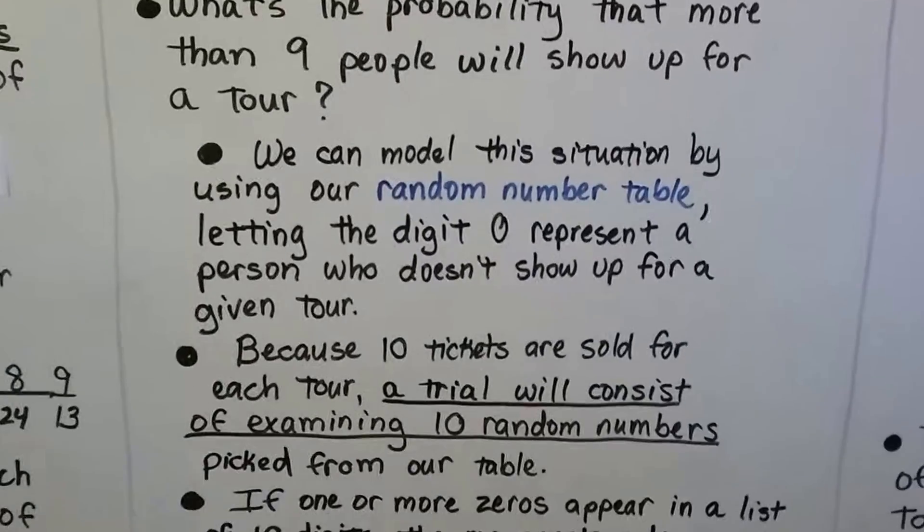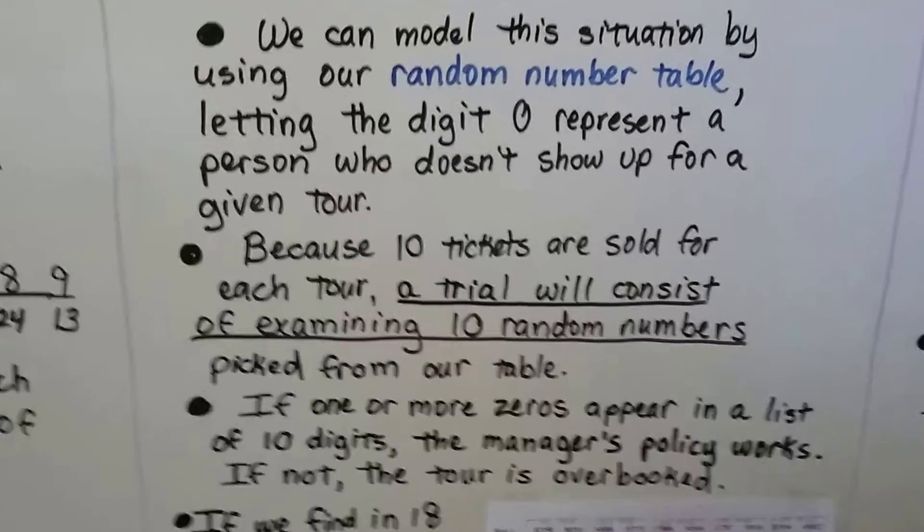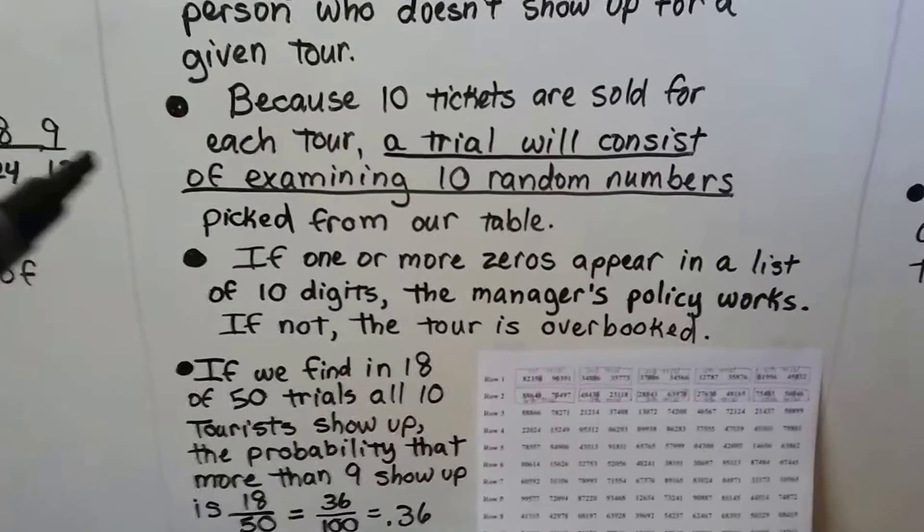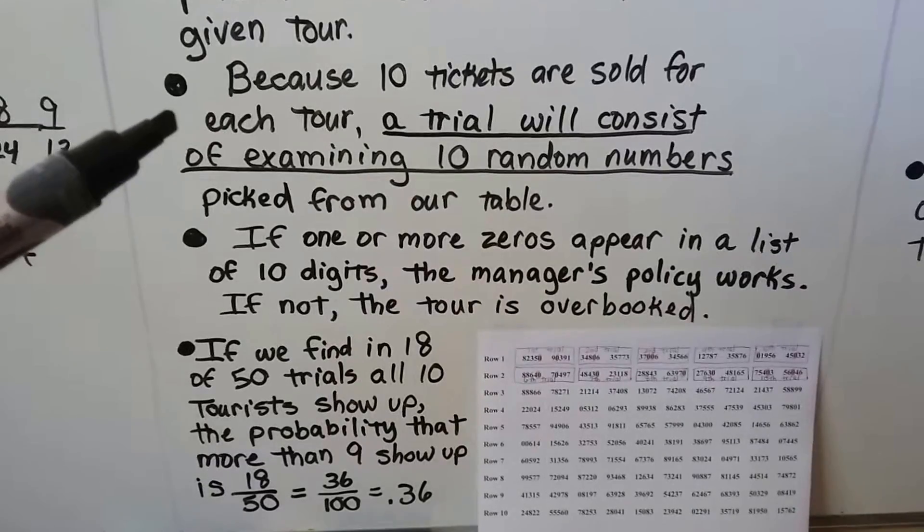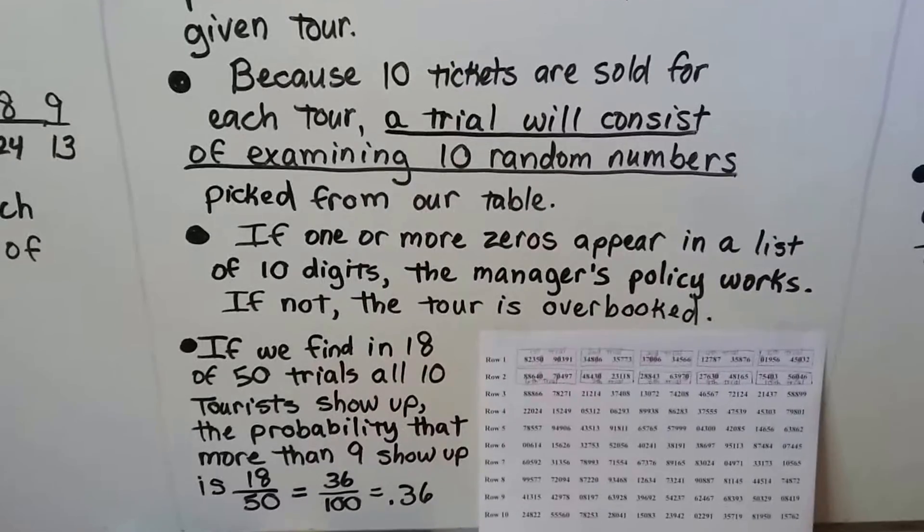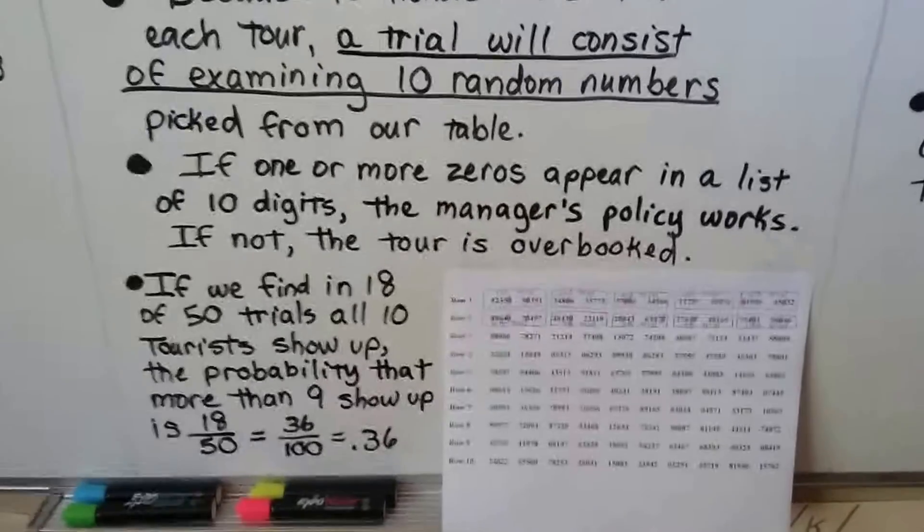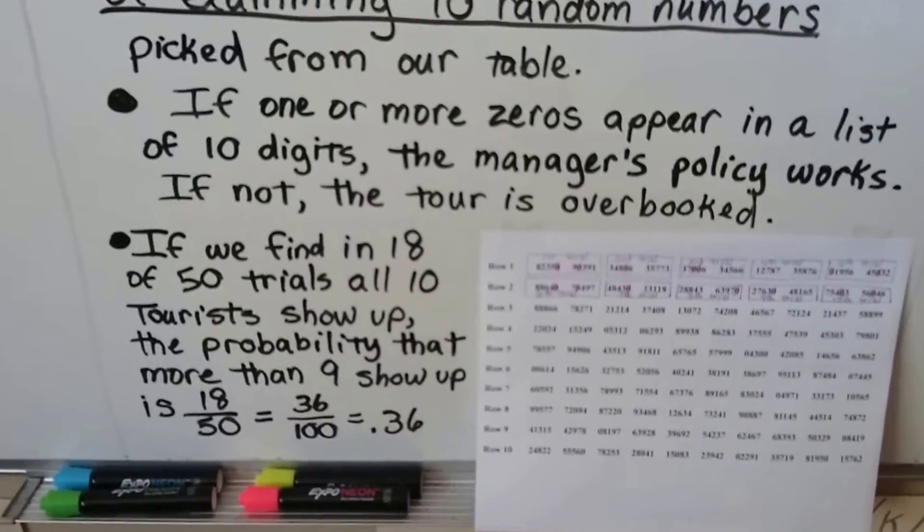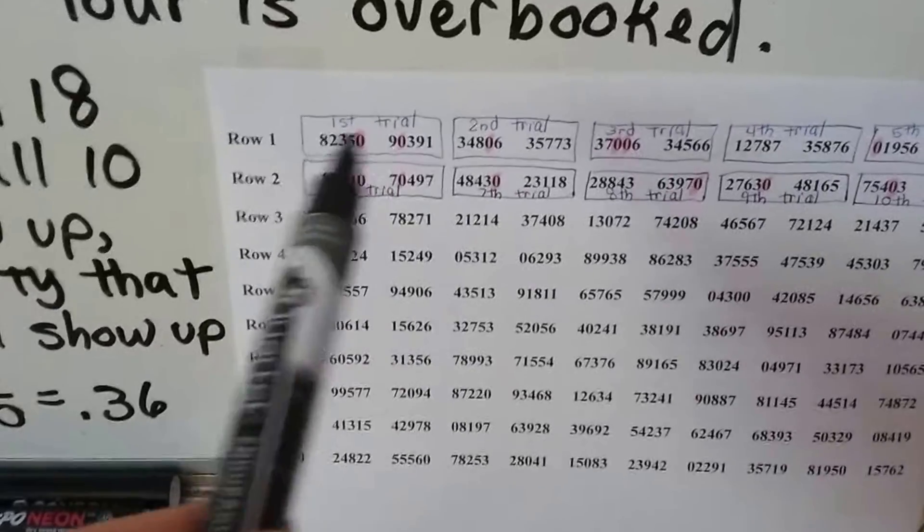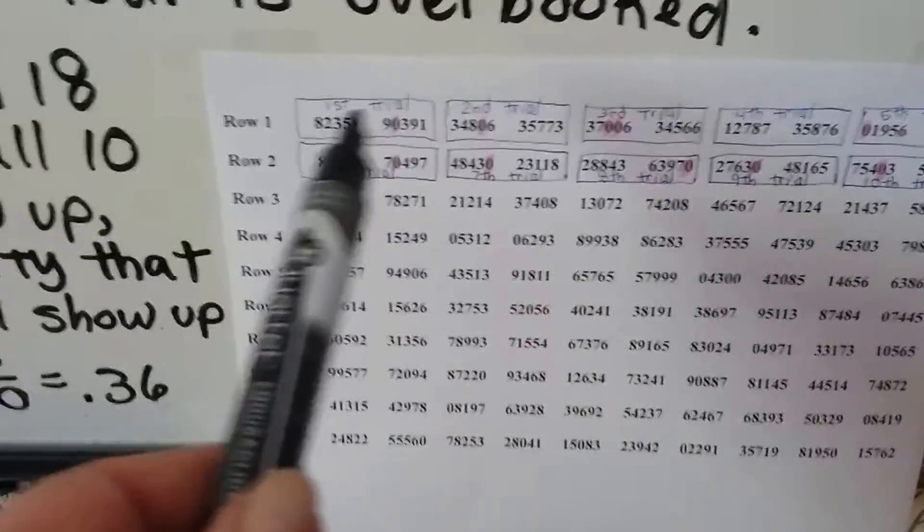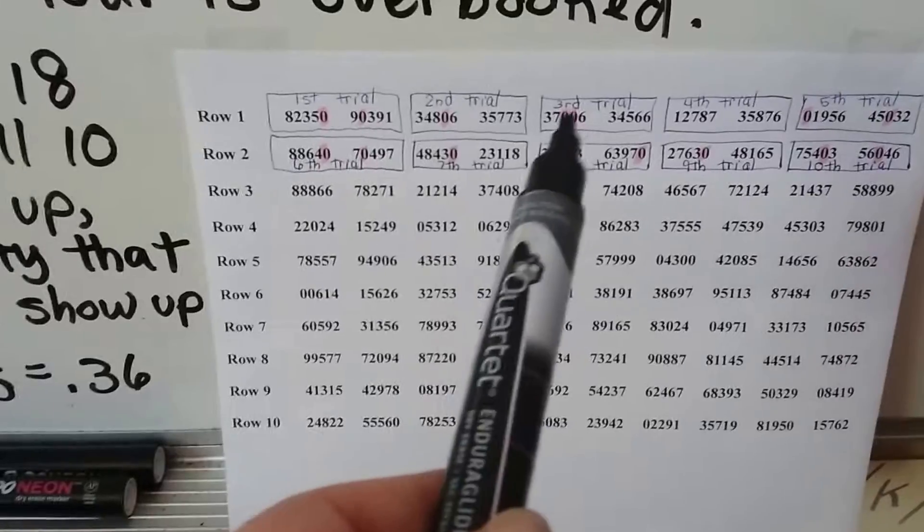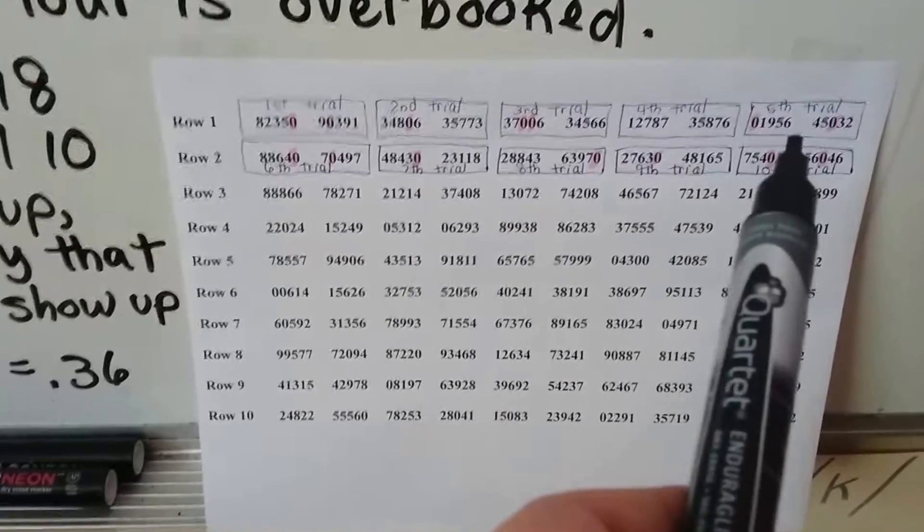We can model this situation by using our random number table, letting the digit 0 represent a person who doesn't show up for a given tour. Because 10 tickets are sold for each tour, a trial will consist of examining 10 random numbers. That's 10 random groups of 10 digits, picked from the table. If one or more zeros appears in the list of 10 digits, the manager's policy works. If not, the tour is overbooked. So here we've got a random number table, and our first trial is going to be two groups of these five. We need 10 digits. And we can see there's zeros here. We even have a 1 here. And the second trial has got a zero. The third trial has got zeros. The fourth one doesn't. The fifth one does.